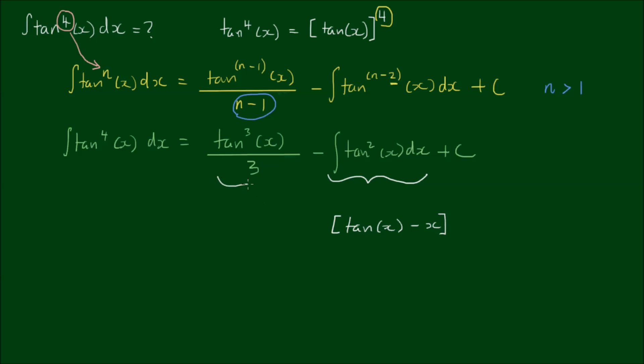So we copy down the other terms. Let's write this one as 1/3 by the tan cubed of x minus tan of x minus x plus c. And we can expand this negative into the brackets here.